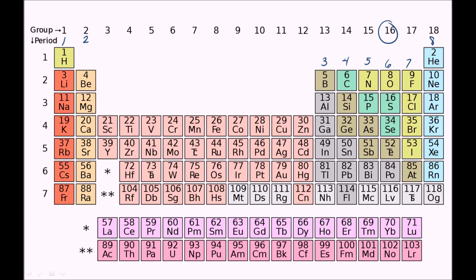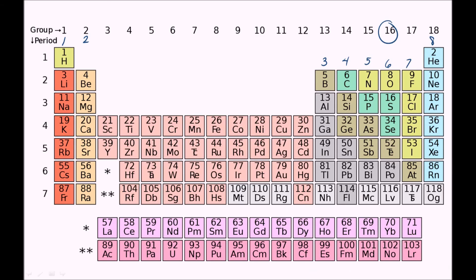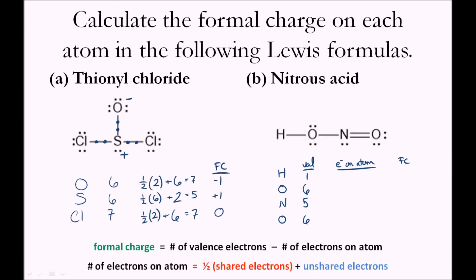For hydrogen, looking at the periodic table, we know it has one valence electron. Oxygen has six, and nitrogen is in group 15 and has five valence electrons. For electrons on the atom: hydrogen has two shared electrons plus zero unshared. The first oxygen has four shared electrons plus four unshared. Nitrogen is connected to the first oxygen with a single bond and to the second oxygen with a double bond, so one-half times six shared electrons plus two unshared.